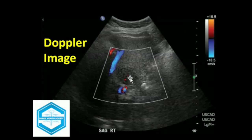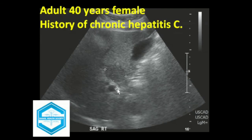This image also shows some peripheral or feeding vessels. To review, this is the solid mass. The liver parenchyma and echotexture is within normal limits.